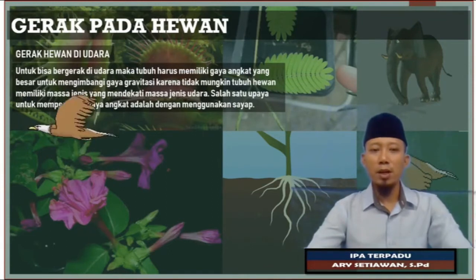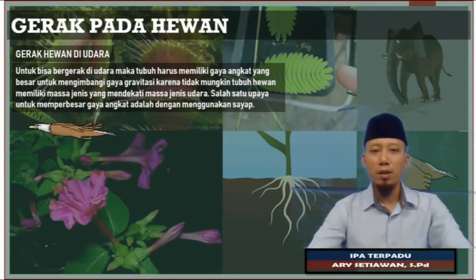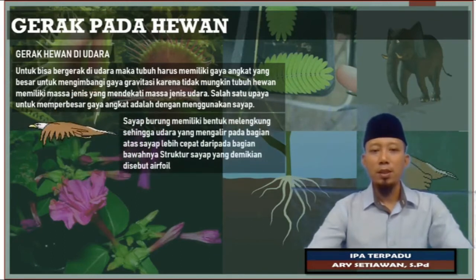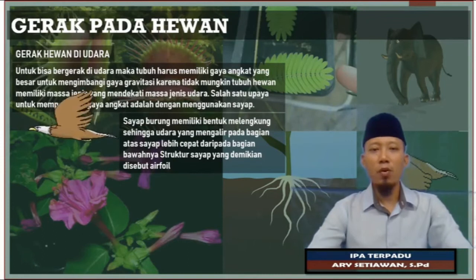Untuk bisa bergerak di udara, maka tubuh harus memiliki gaya angkat yang sangat besar, karena mengimbangi gaya gravitasi. Tidak mungkin tubuh hewan memiliki massa jenis yang mendekati massa jenis udara, sehingga salah satu langkahnya yaitu dengan menggunakan sayap. Kalau kita lihat struktur sayap, bentuknya melengkung sehingga udara mengalir pada bagian atas sayap yang lebih cepat. Struktur sayap tersebut biasanya disebut dengan airfoil.